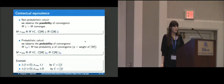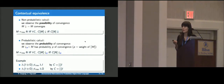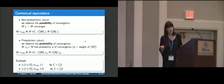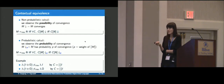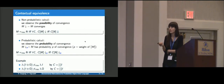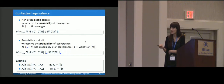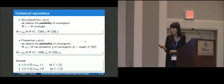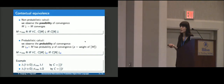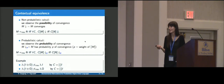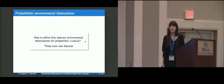What is contextual equivalence in probabilistic calculi? We said that what we observe is the possibility of convergence. In probabilistic calculi, however, we can observe something more: the probability of convergence, which is just the weight of the semantics of a term. Two terms are contextually equivalent if, when put in the same context, they converge with the same probability — which of course might be zero. For instance, on the left we have a term that, given an argument, converges with probability one half; on the right, lambda I that converges with probability one given an argument, and lambda omega that converges with probability zero.